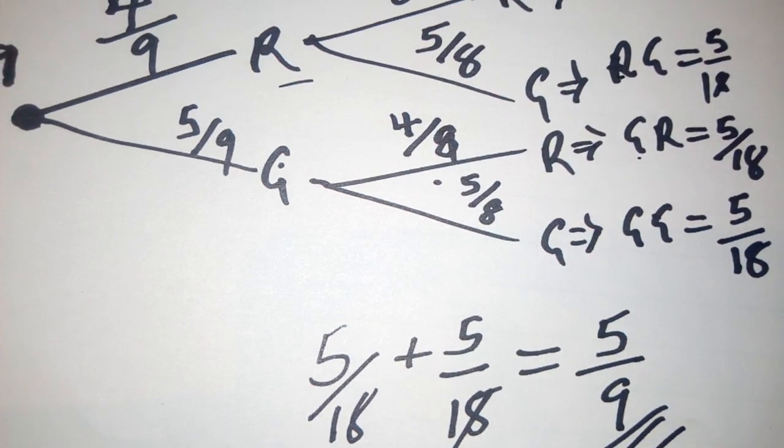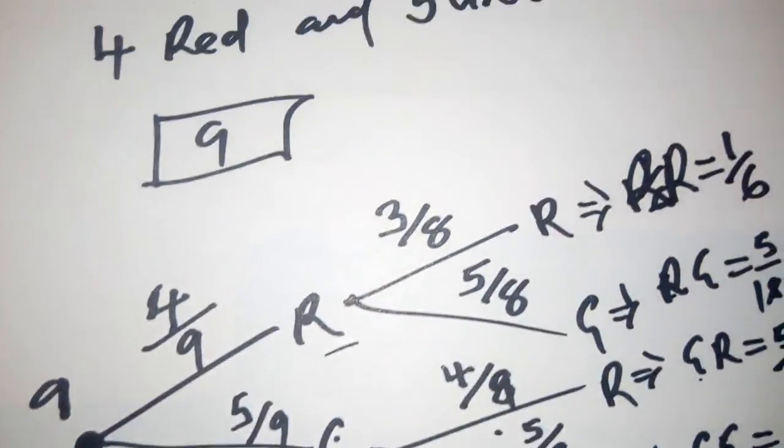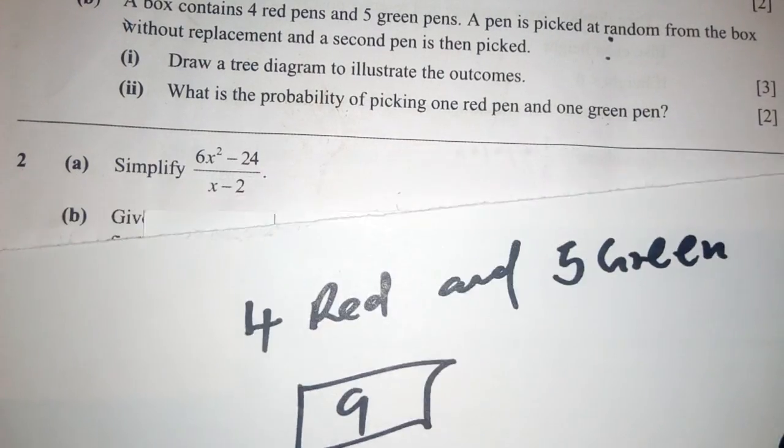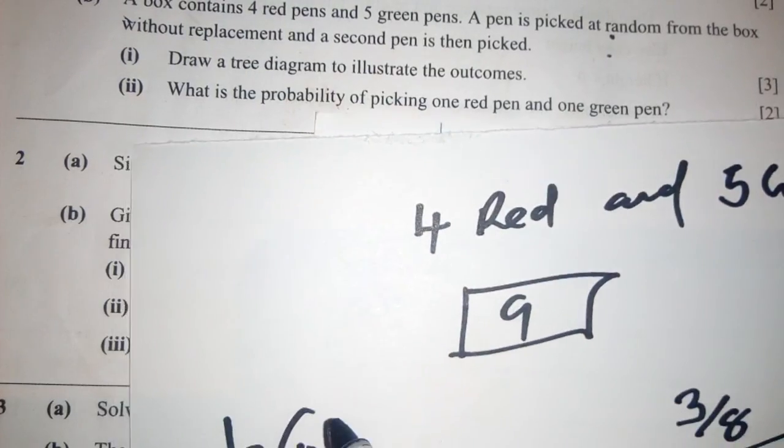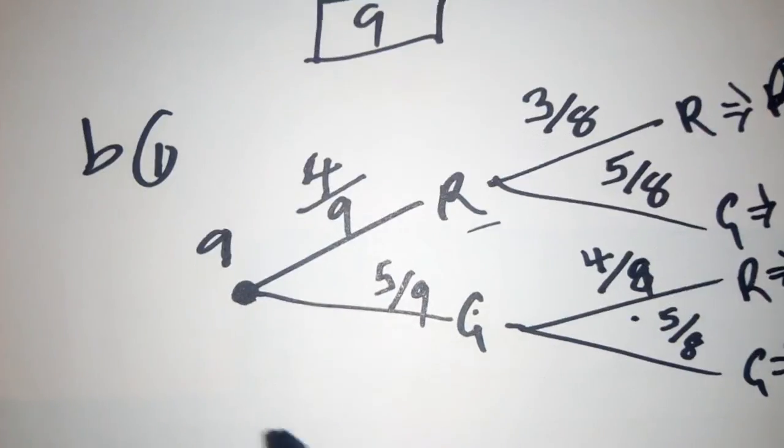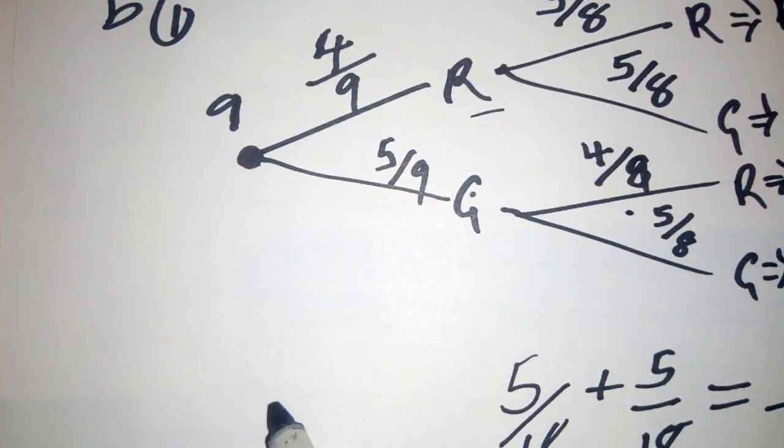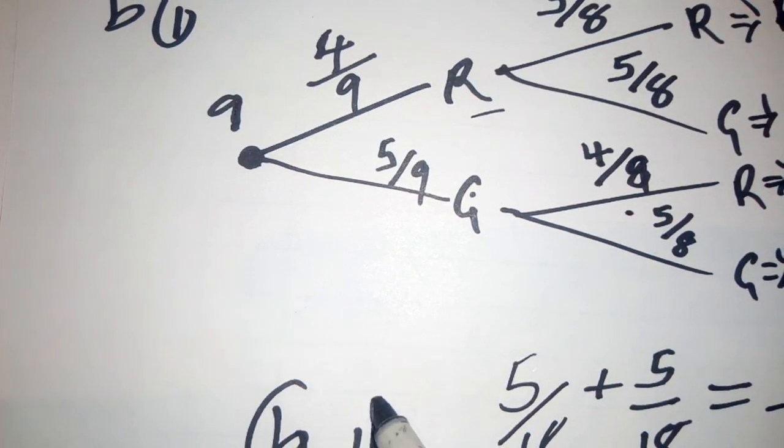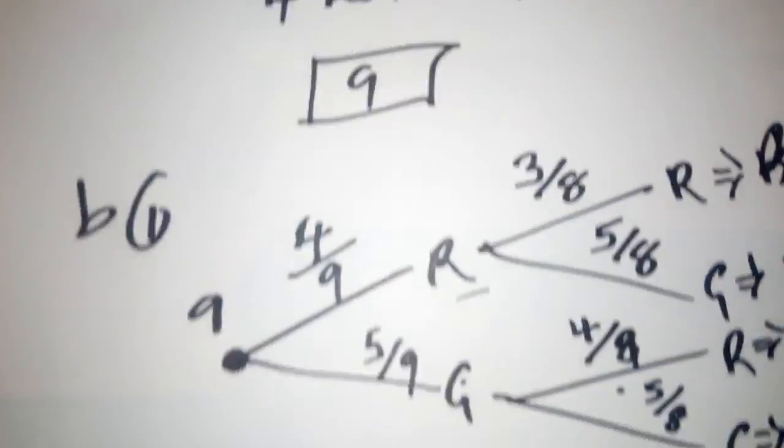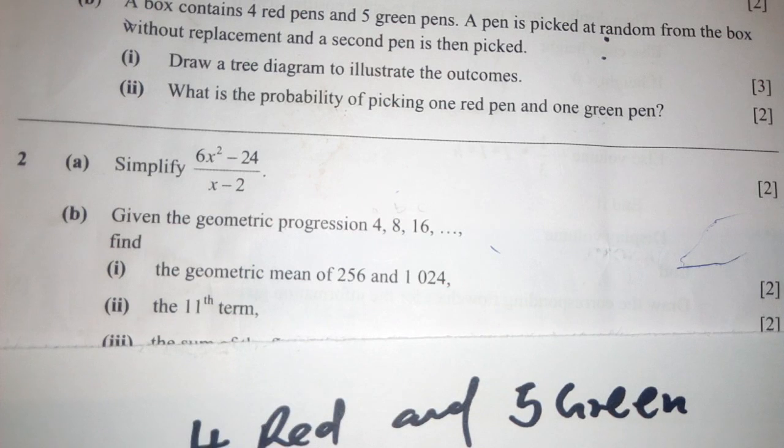So it will be 5 over 18 plus 5 over 18, which will give us 5 over 9. So this is the answer for B2. This is B1 and over here it's B2. Thank you very much.